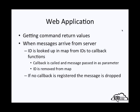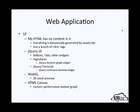The UI for my web application is somewhat unique in that my HTML actually has no content in it — everything is dynamically generated by JavaScript, and the HTML just consists of a bunch of div tags. I've been using jQuery UI, which is a really nice widget toolkit library with things like buttons and tab widgets. I've been using HiCharts, an off-the-shelf dynamic graph widget built on top of jQuery. I also have a command terminal built into the application using the jQuery terminal library. For 3D asset preview I've been using WebGL, and for custom performance marker graphs I've been taking advantage of the HTML canvas.